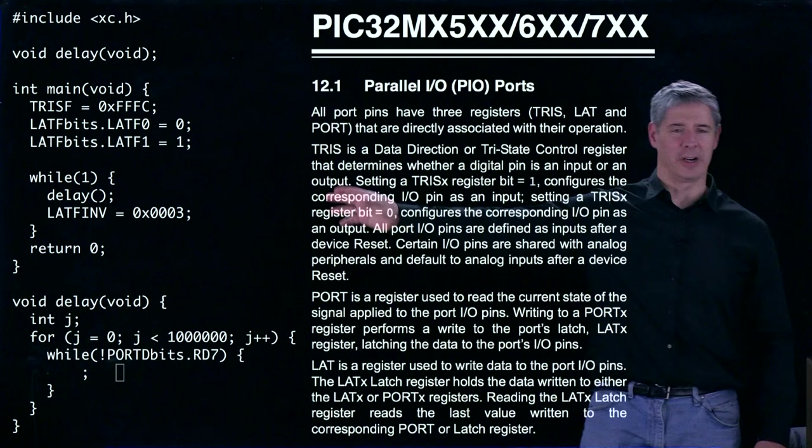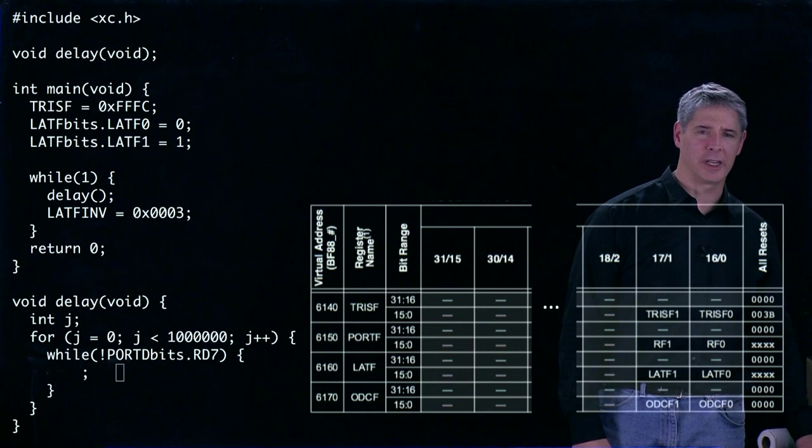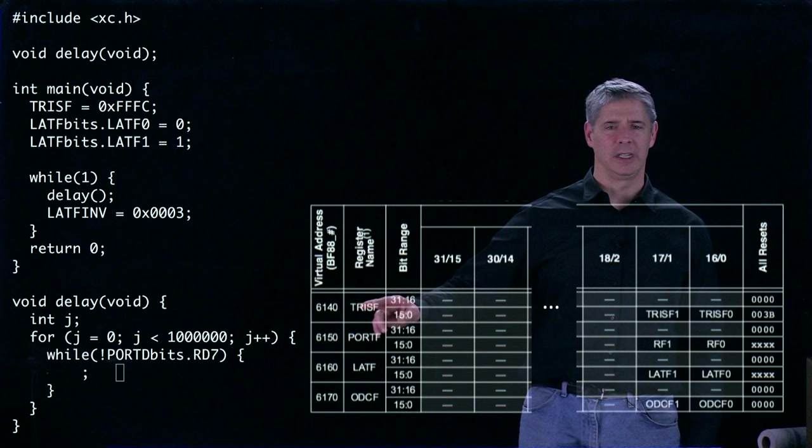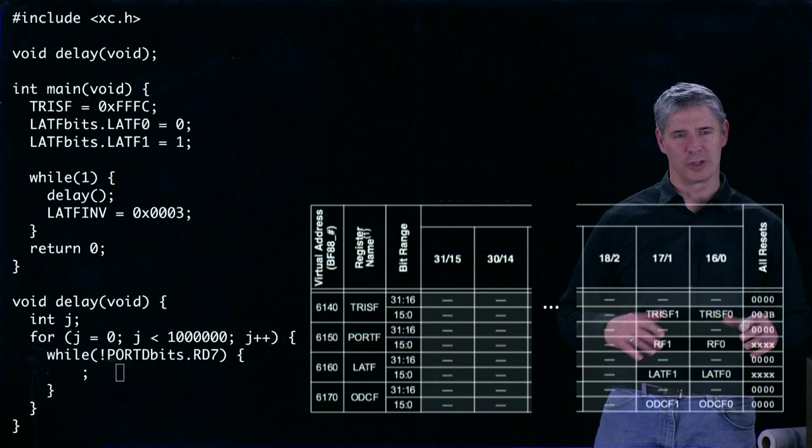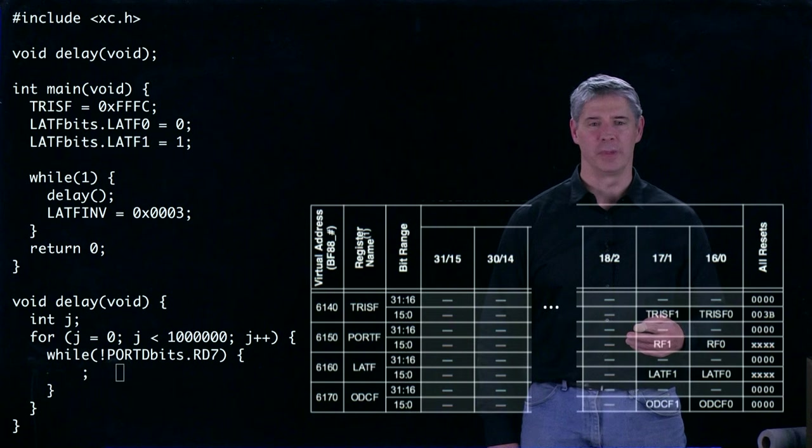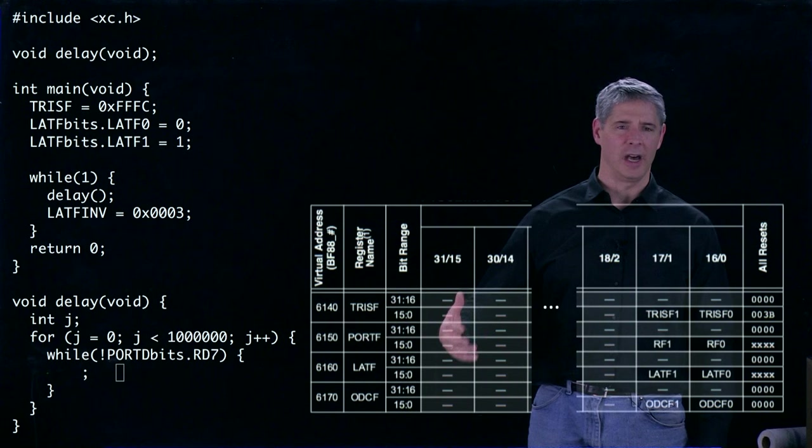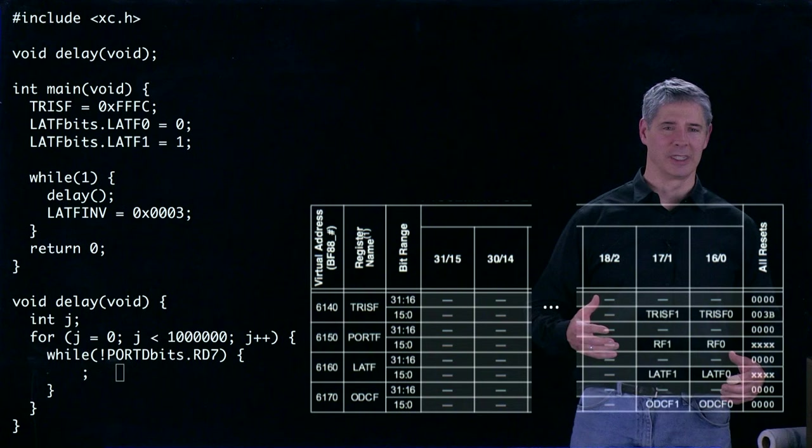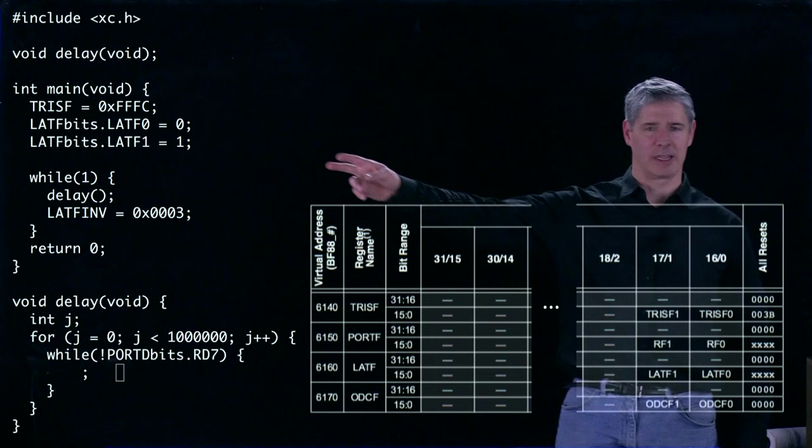So we're starting to see that these variable assignments over here correspond to special function registers. And we can further take a look at the memory map that's also in the data sheet. And here we see TRIS F and down here LAT F defined. And we can see which bits of those special function registers are actually defined. So each special function register has 32 bits. But if we take a look at TRIS F, for example, we'll see that many of the bits are not defined at all. In fact, all of these ones are not implemented, so they don't really exist. But if we come over here, we see that TRIS F1 exists and TRIS F0 exists. And those are exactly what we're using over here.